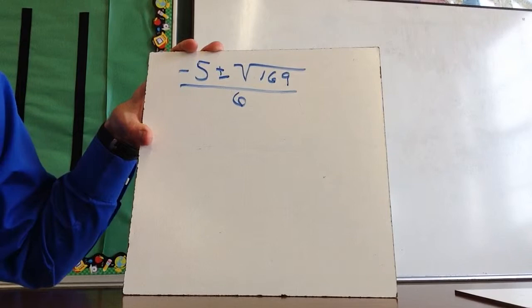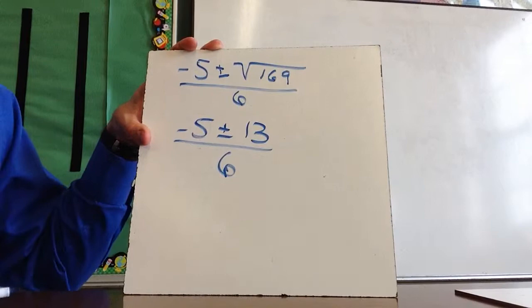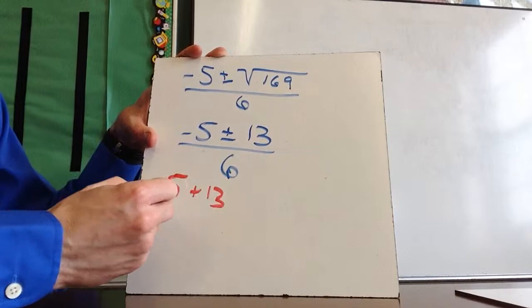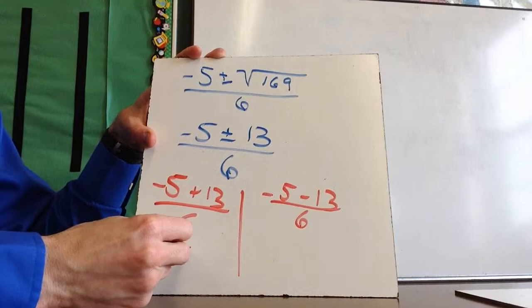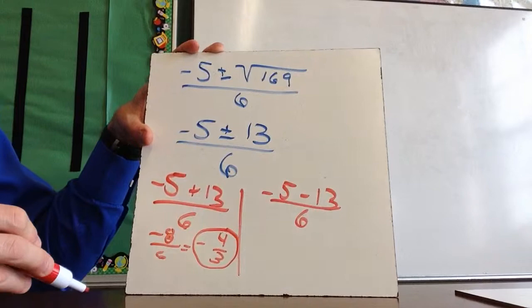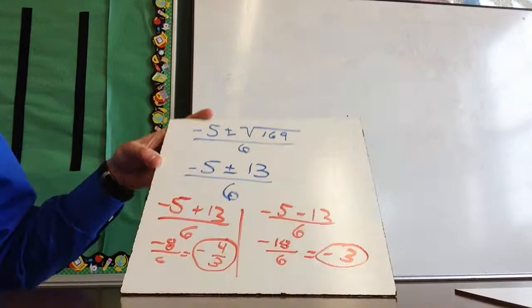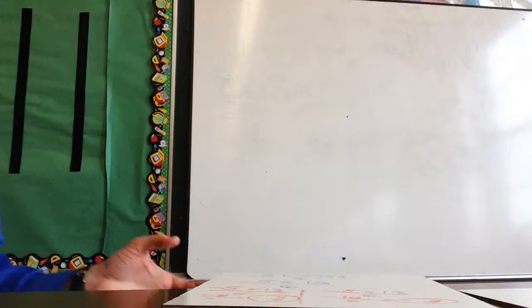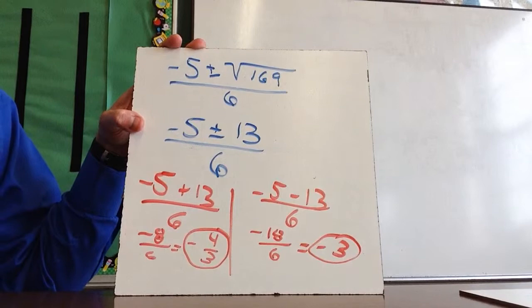The square root of 169 is 13, so I've got negative 5 plus or minus 13 over 6. Splitting into two: negative 5 plus 13 over 6 gives 8 over 6, which reduces to 4 thirds — wait, that's actually negative 8 over 6, which is negative 4 thirds. And negative 5 minus 13 gives negative 18 over 6, which reduces to negative 3. So x equals negative 4 thirds and x equals negative 3. Sometimes the answer doesn't work out nicely and you'd need to round — we'll practice that later.